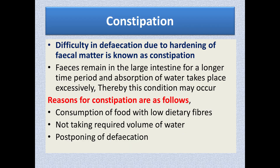The second disease is constipation. Constipation means difficulty in defecation due to hardening of fecal matter. This occurs because the fecal matter remains in the large intestine for a longer period of time, causing excessive water absorption. In the large intestine, digestion does not occur — only water is absorbed. If food matter stays there too long, most of the water is absorbed and the fecal matter becomes very hard, making it difficult to pass.